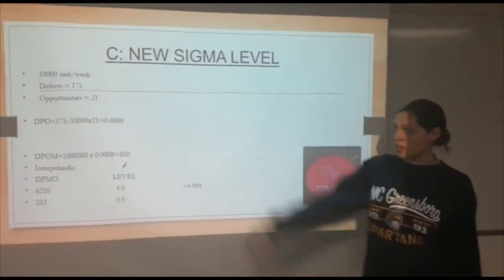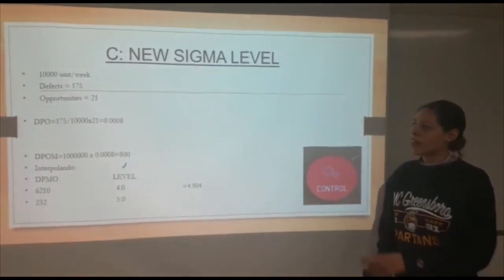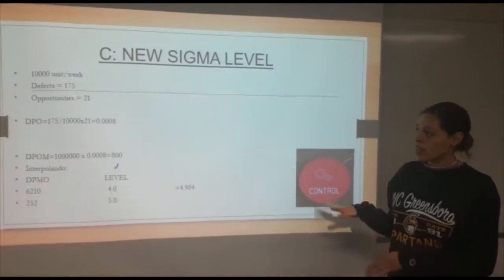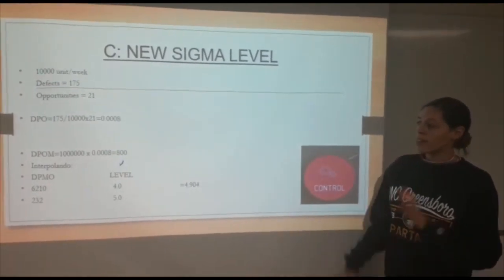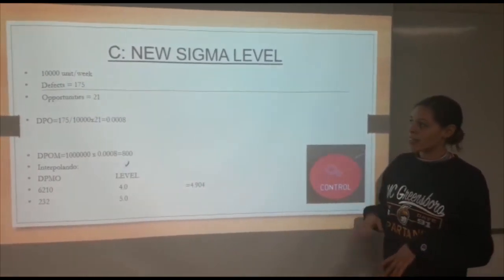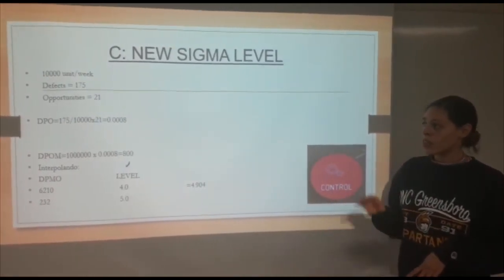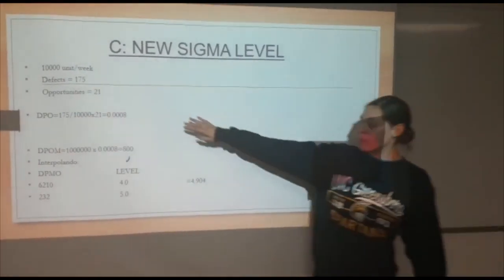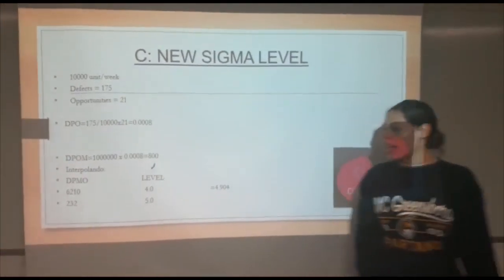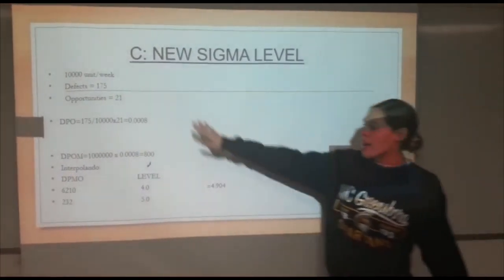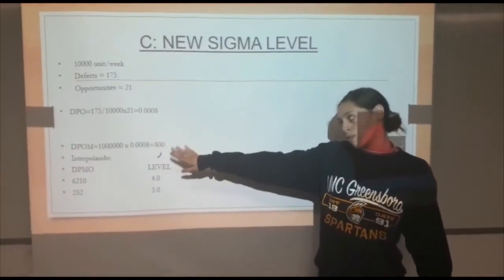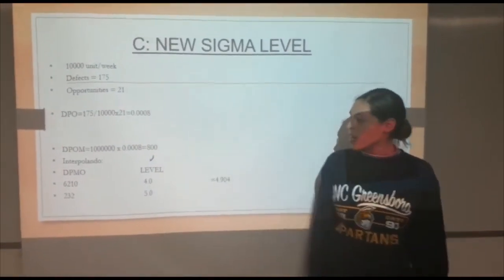The defects have decreased: now we only have 175 defects and the opportunities remain 21. The defects per opportunity is 175 divided by 10,000 times 21, which gives us this number. Multiplying by 1,000,000 we get 800 DPMO.